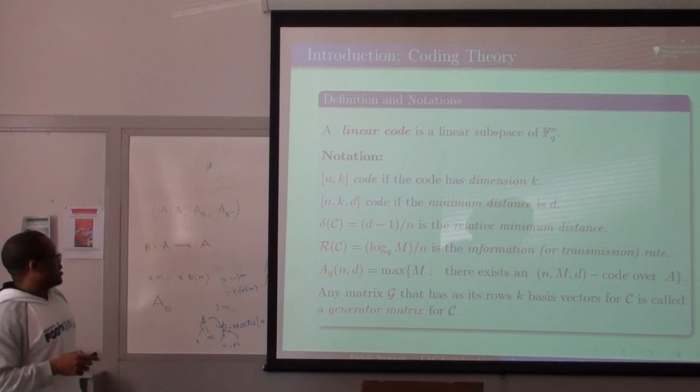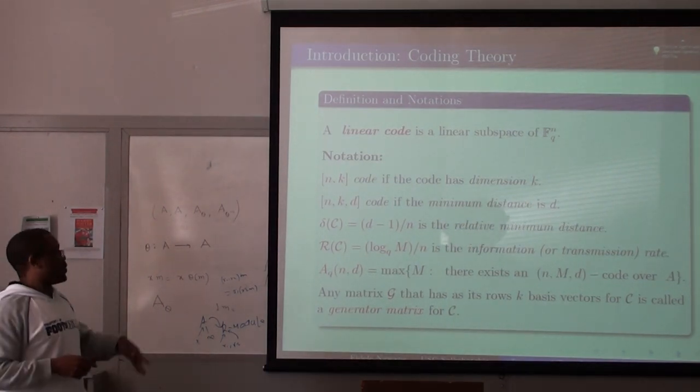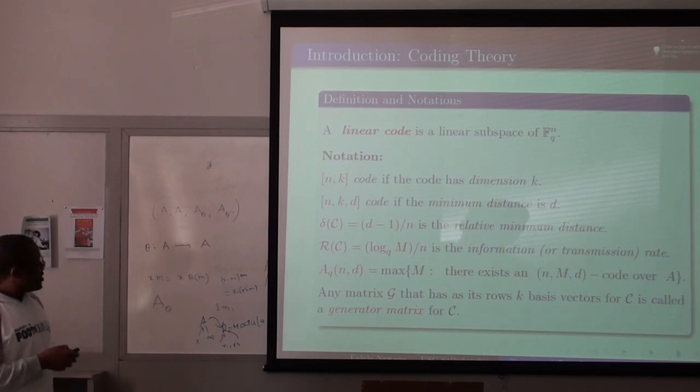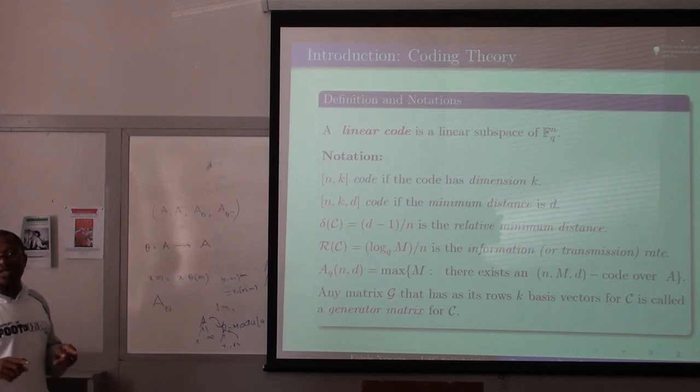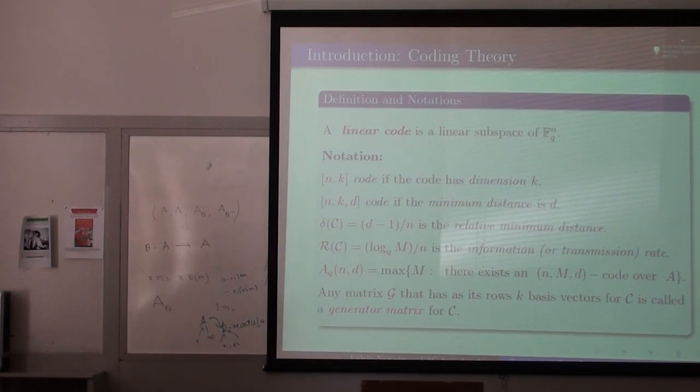Here are some notations that we use. The linear code is just going to be a subspace. The interesting things which you want to pay attention to are the relative minimum distance, which is just the ratio of the minimum distance minus 1 divided by the word length. Then also the transmission rate, which deals with how fast you can transmit your information. Then this notation, A sub Q(n,d), is going to be the maximum size of your code. It is not easy to get that maximum size. That is very important, and one of our goals would be to see how to figure that out.